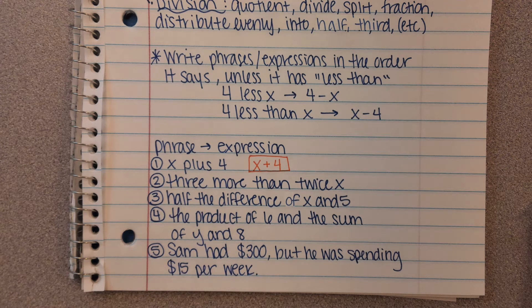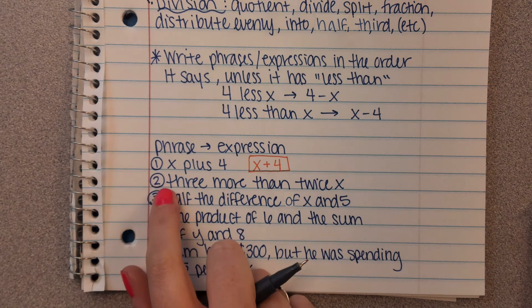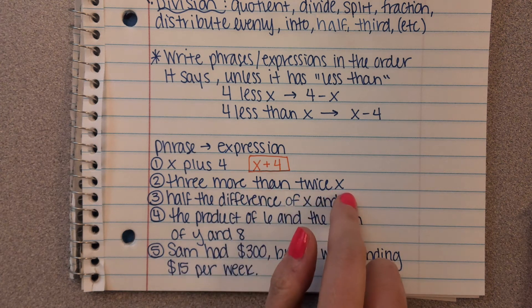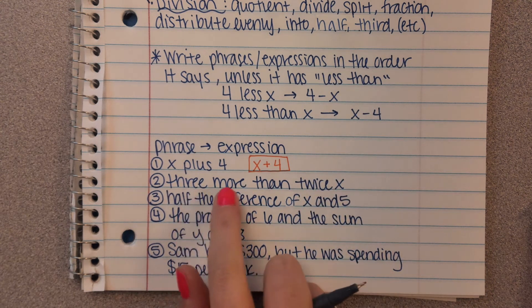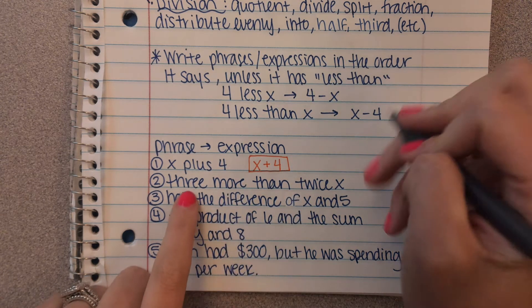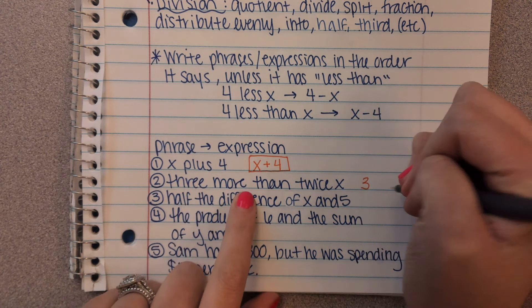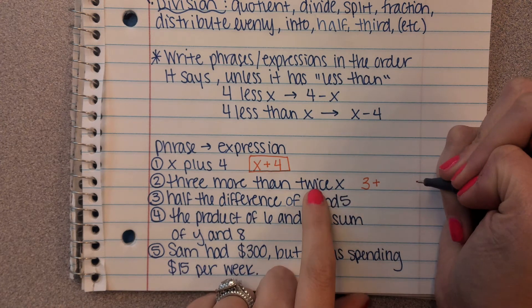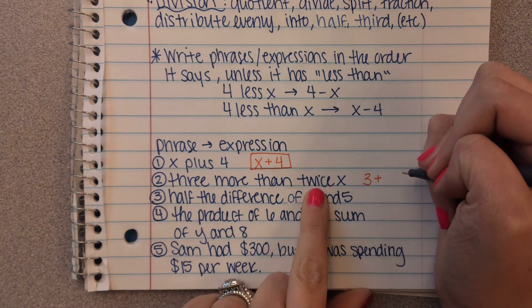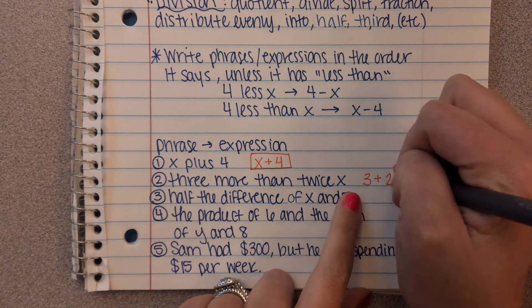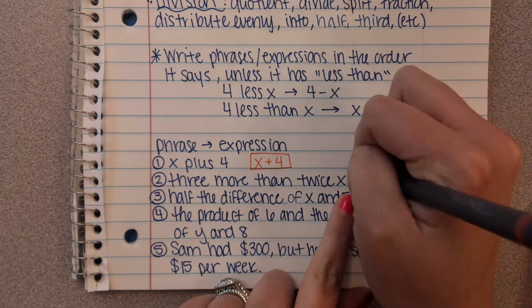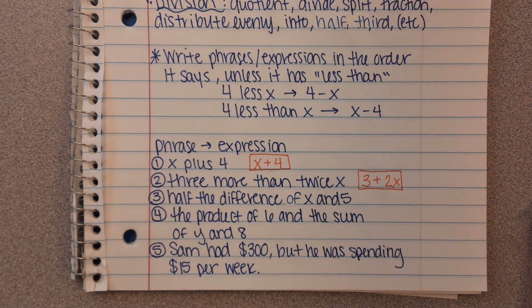Number 2: '3 more than twice x.' It doesn't say 'less than,' so we go in order. '3 more than' means plus, and 'twice x' means 2x. So we have 2x plus 3. Again, since that's addition, you could also say 3 plus 2x — same thing.